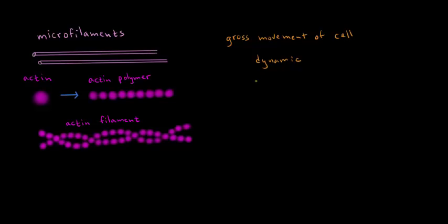They become longer in a process known as actin polymerization and become shorter in a process known as actin depolymerization. It's the polymerization and depolymerization that helps to move the cell.